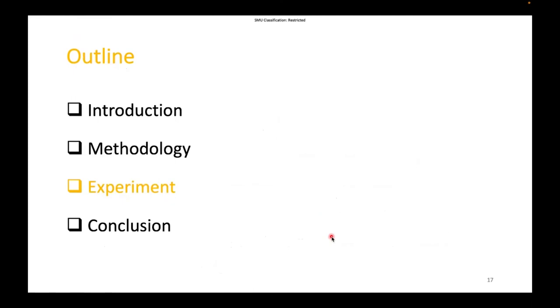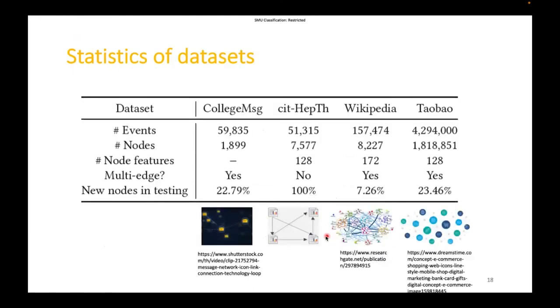Next, let's look at our experiment. We use four public temporal graph datasets. College Message is an online social network in which an event is a user sending another user a private message. CitHepTh is a citation graph about high energy physics theory in which an event is a paper citation. Wikipedia is a Wikipedia graph in which an event is a user editing a page. Taobao is an e-commerce platform in which an event is a user purchasing an item.